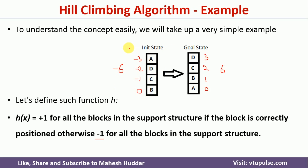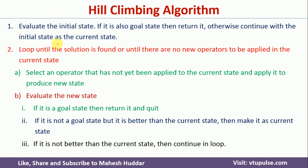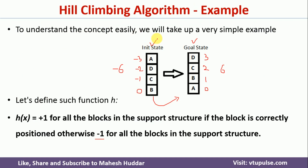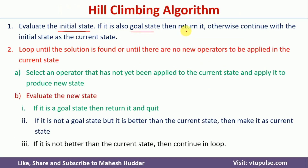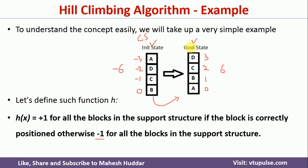So we have to start from this initial state and go to the goal state by applying the hill climbing algorithm. The very first step is to evaluate the initial state. If it is a goal state, we return it and stop. Otherwise, the initial state is not a goal state, so we continue with it as the current state.